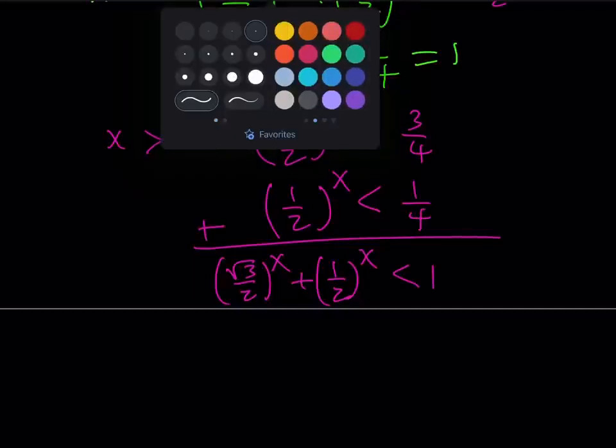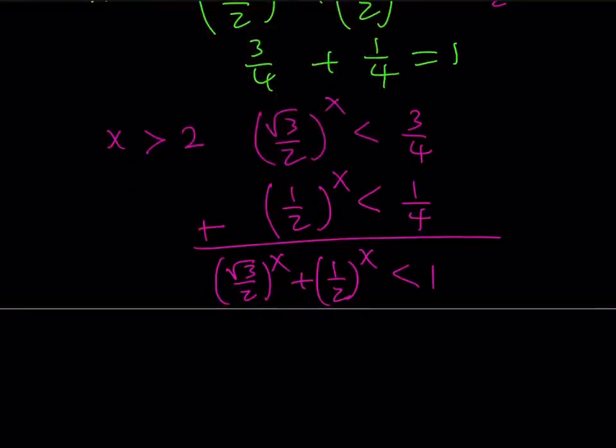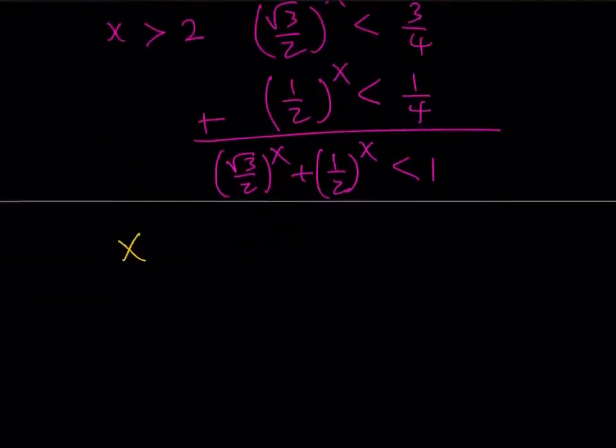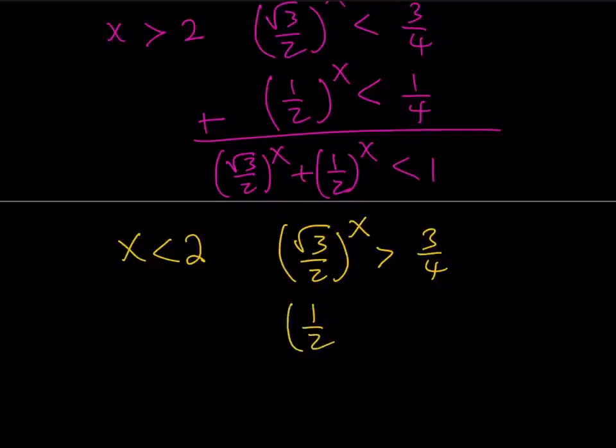So, we need to find something else. What happens if x is less than 2, right? Let's take a look at that one as well. Well, if x is less than 2, then square root of 3 over 2 to the power x, now notice that as x gets smaller and smaller, think about the negatives, think about 0.1, stuff like that, the answer is going to get larger. So, this is going to be greater than 3 fourths. And the same thing applies for 1 half to the power x, it's going to be greater than 1 fourth.